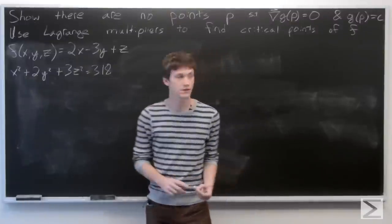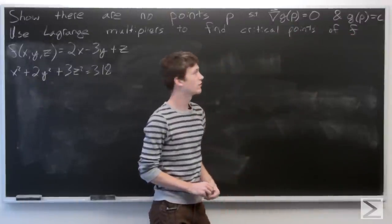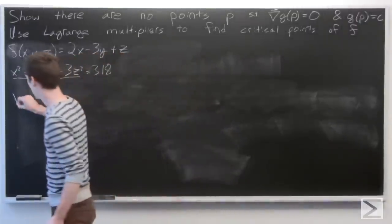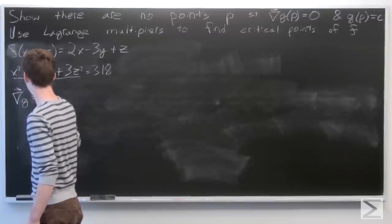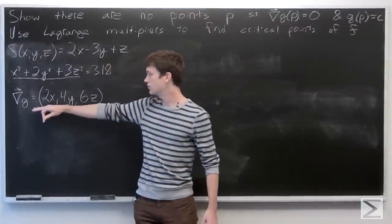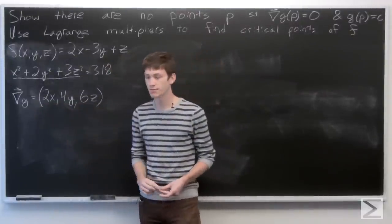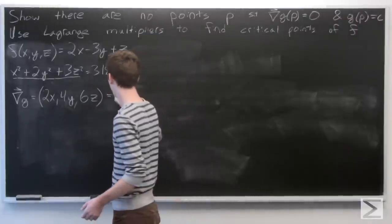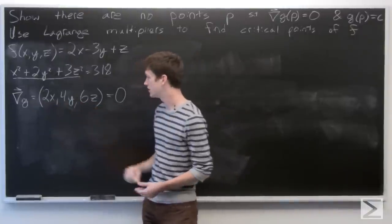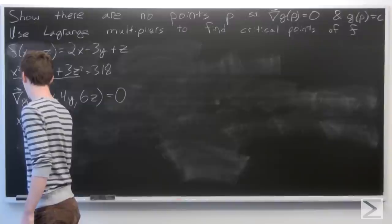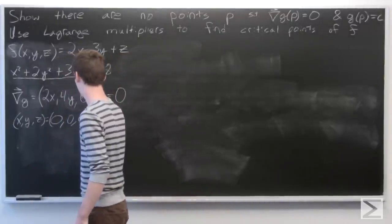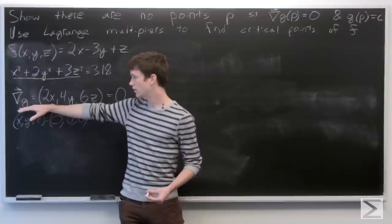First, we want to show that there are no points satisfying our constraint where the gradient vector is equal to 0. We'll take the gradient vector of g, which is equal to (2x, 4y, 6z). We want to find points where our gradient vector is equal to 0, so we'll set that equal to 0. That tells us each of the components are equal to 0, and in order for that to be true, x, y, and z all have to be 0. So we have one point where our gradient vector of our constraint is equal to 0.